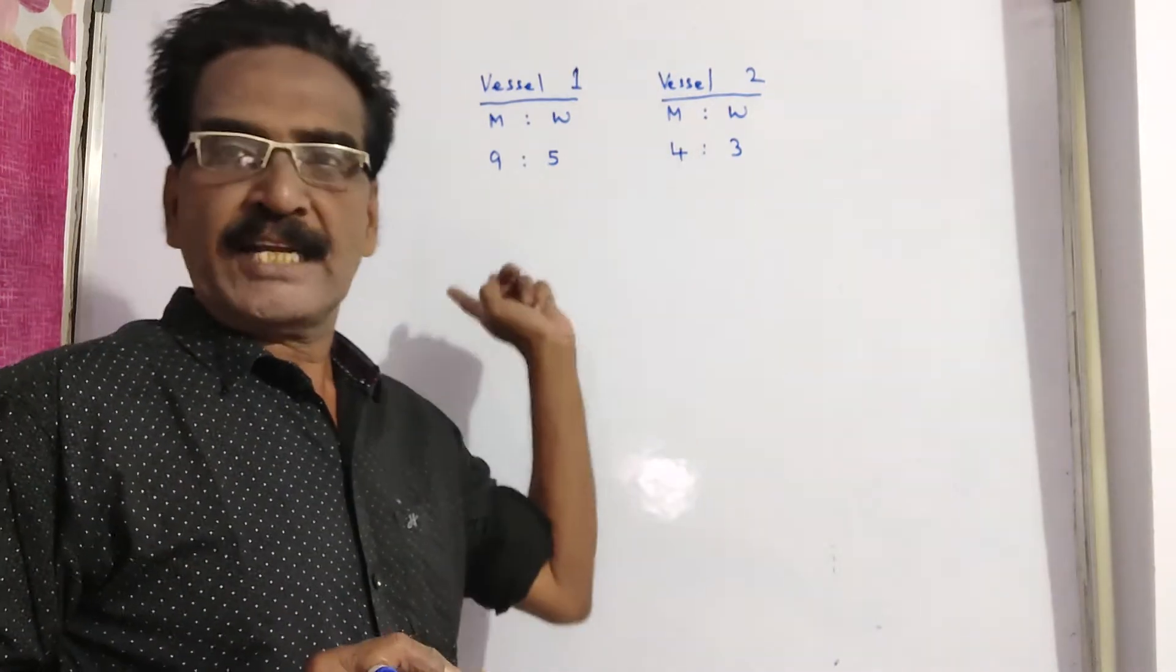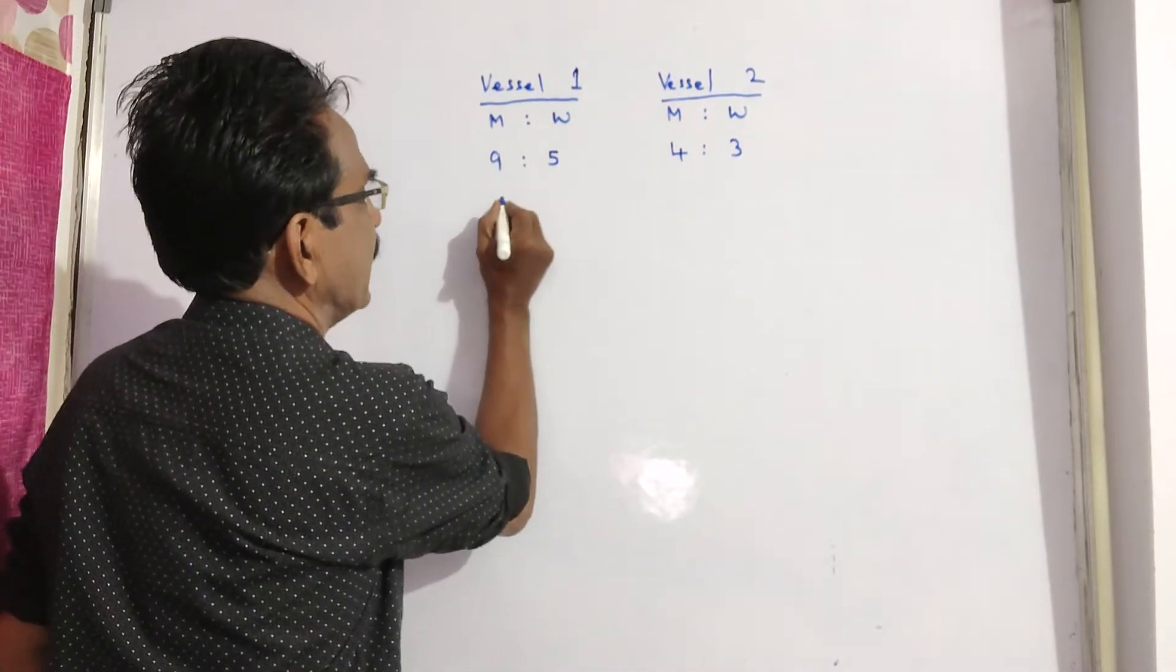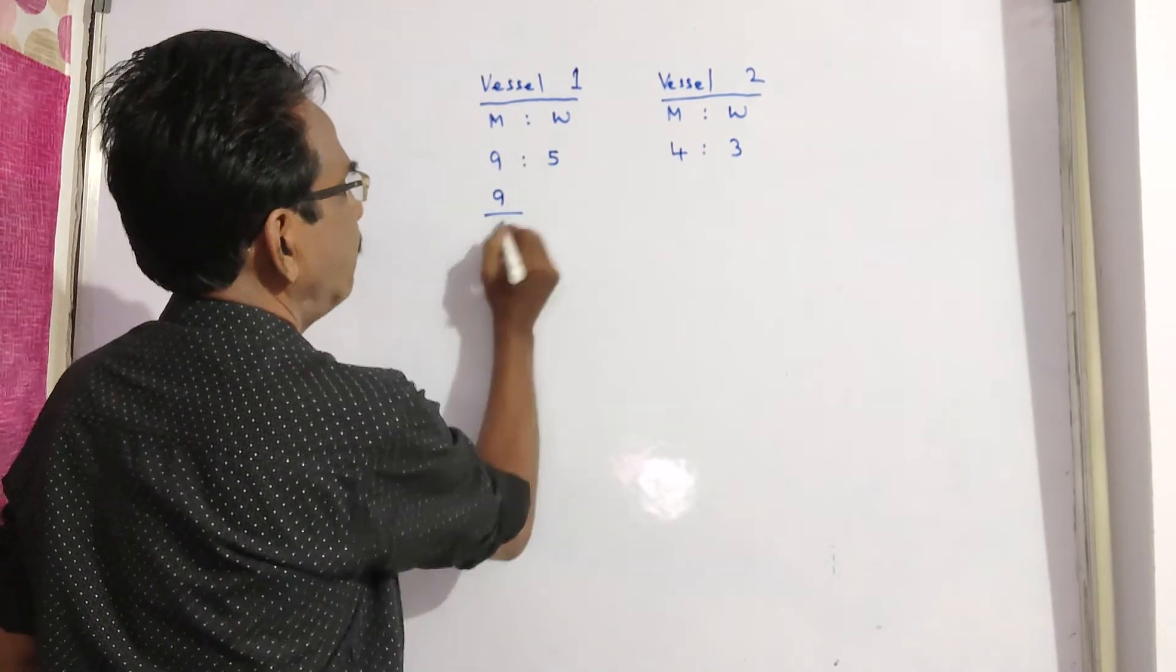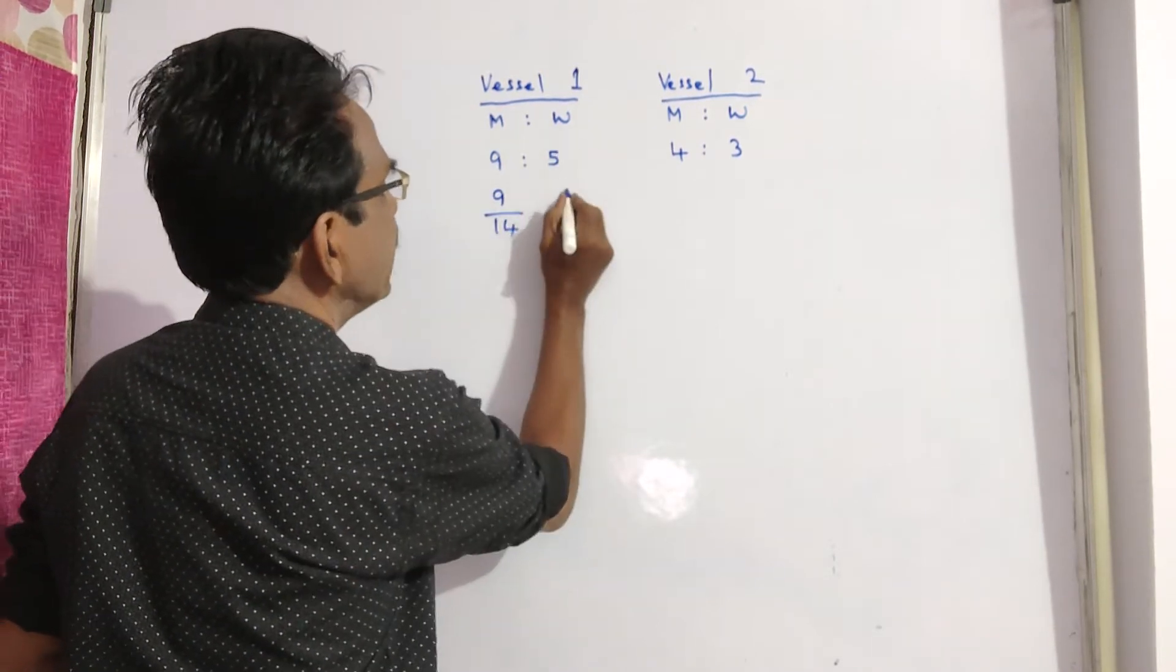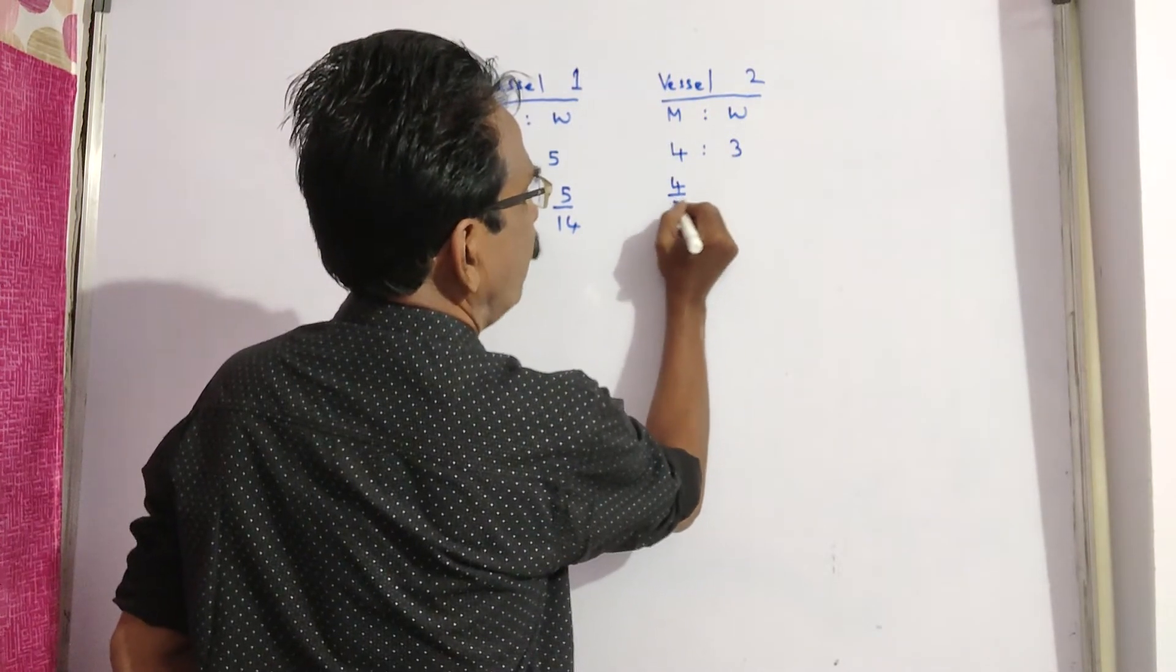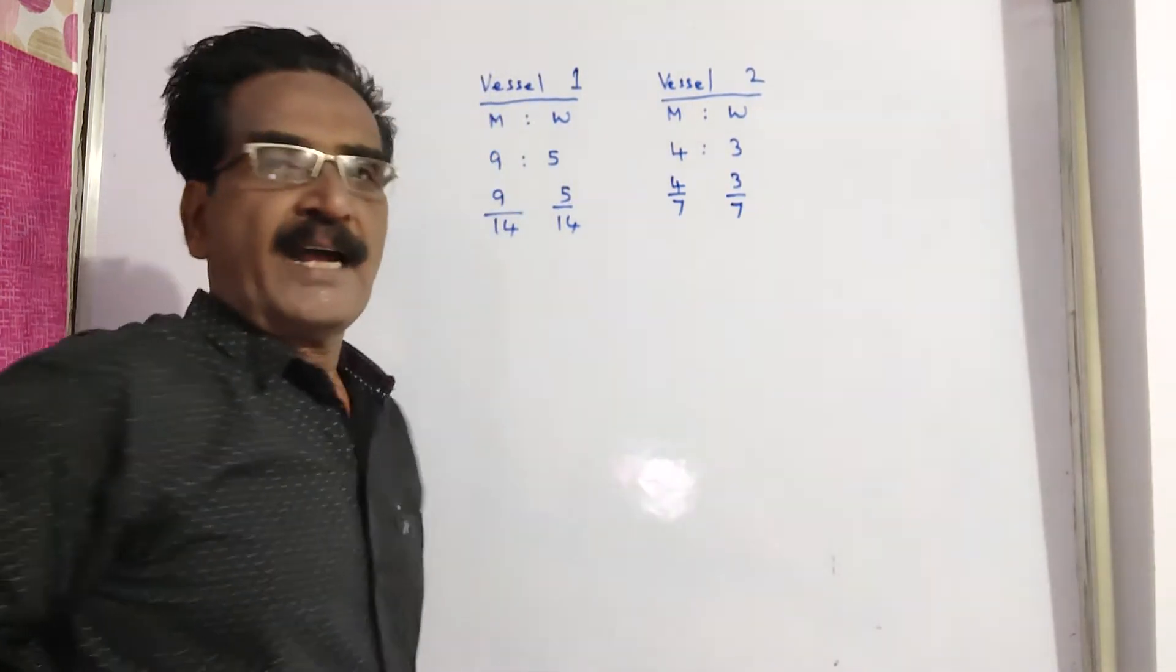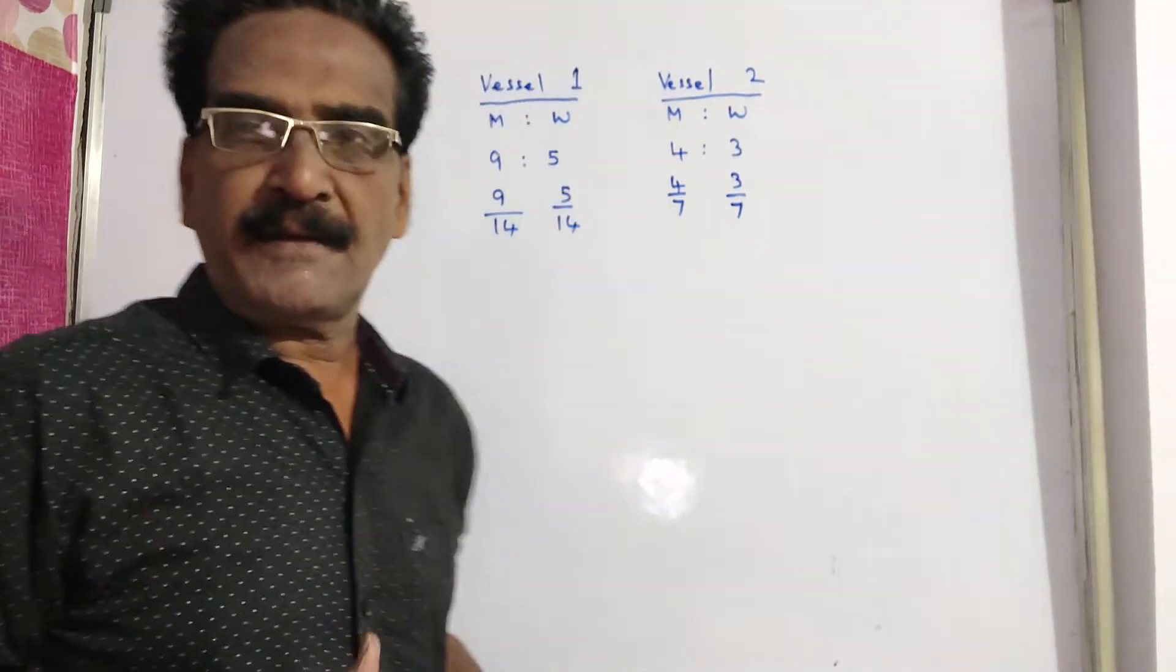Friends, these two are equal quantities. Now, here the milk in the first vessel is 9 by 9 plus 5, which is 14, and water is 5 by 14. Here in the second vessel, milk is 4 by 7 and water is 3 by 7. Now these two mixtures are mixed.